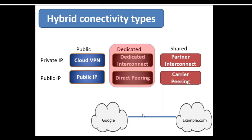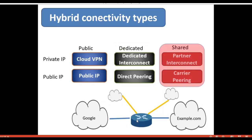With a dedicated link, data transfer between your on-prem and Google will not transit over the public internet but via this dedicated physical link, which provides performance benefits. For shared, instead of having a direct physical link to Google — which is sometimes not possible — you set up a physical link to one of the service providers near you. This service provider then connects you dedicatedly to Google. Since this provider can also serve other companies, this connectivity type is called shared.